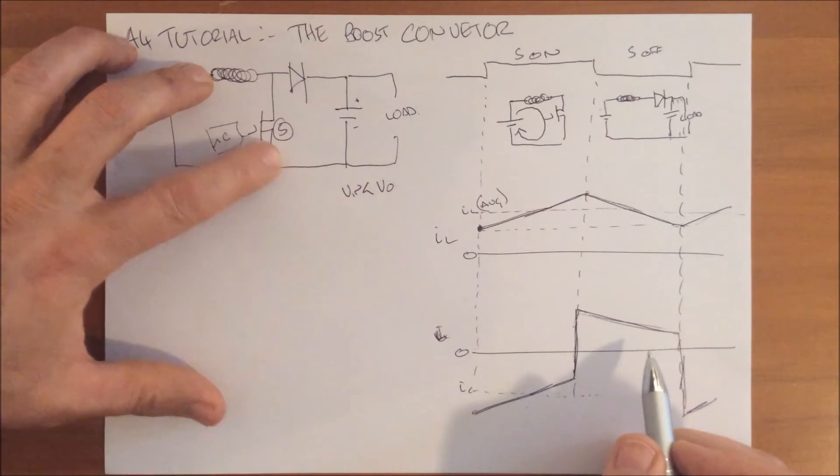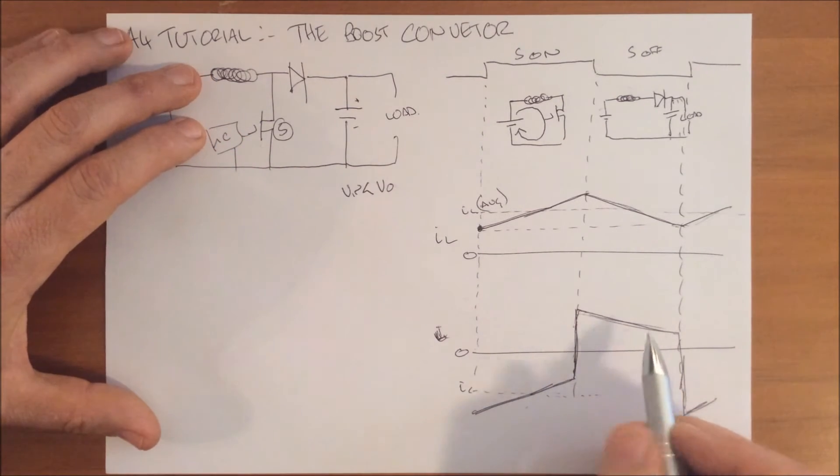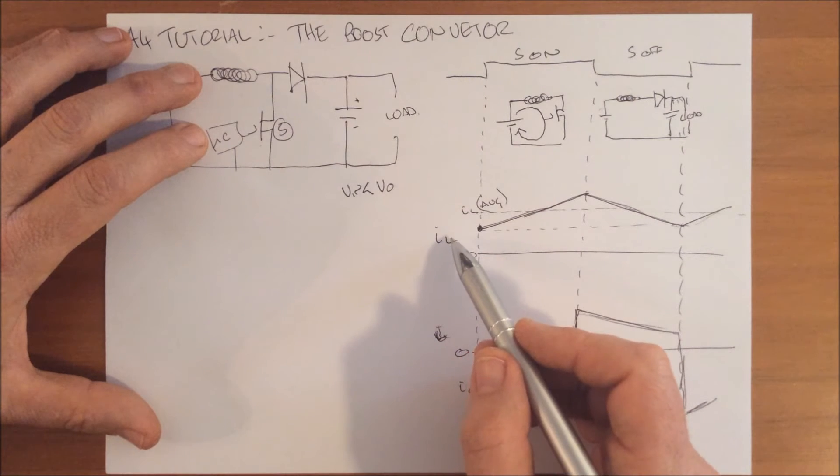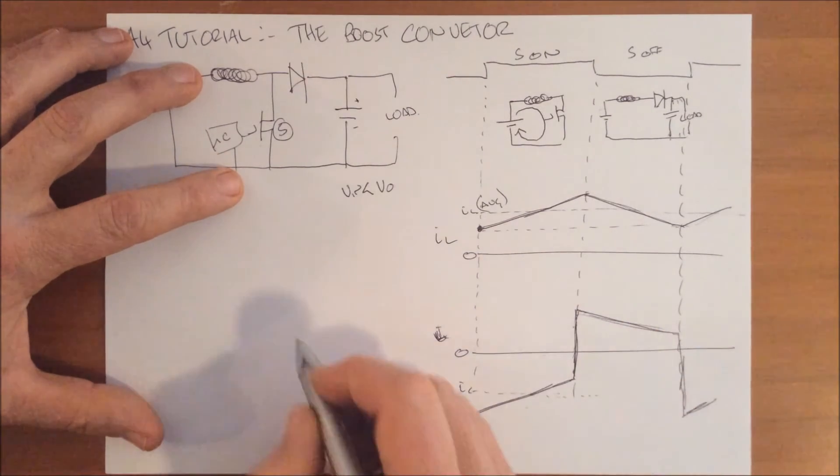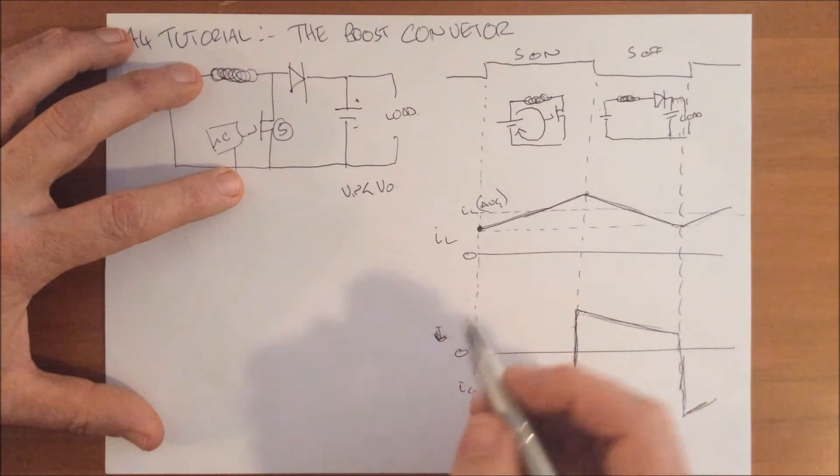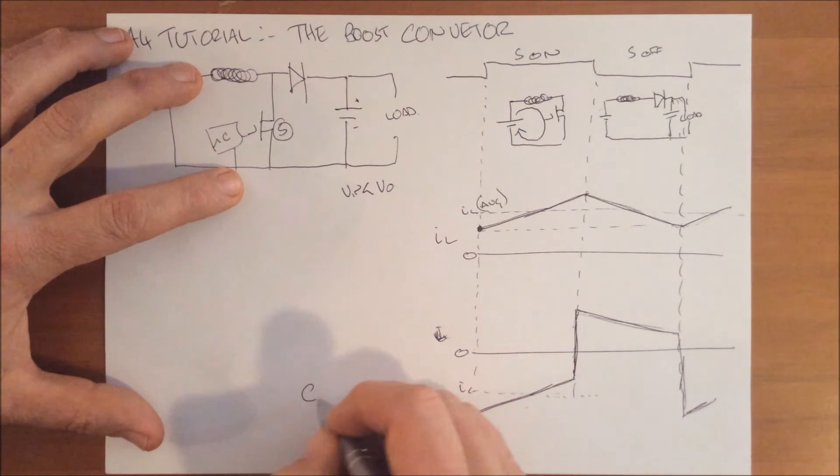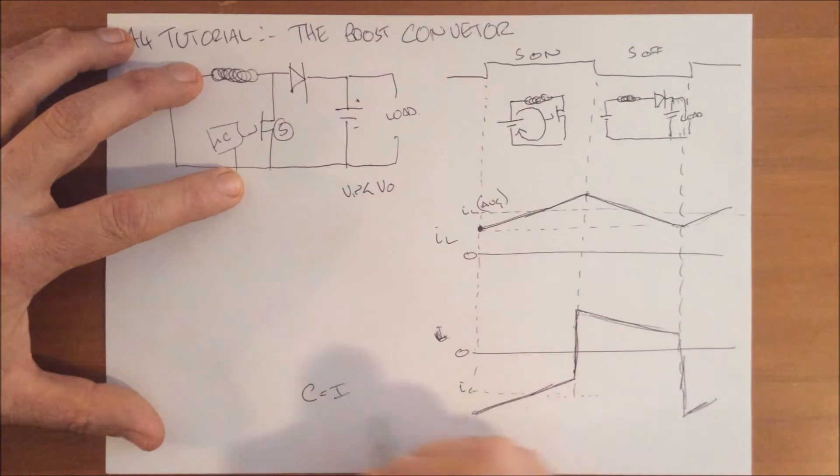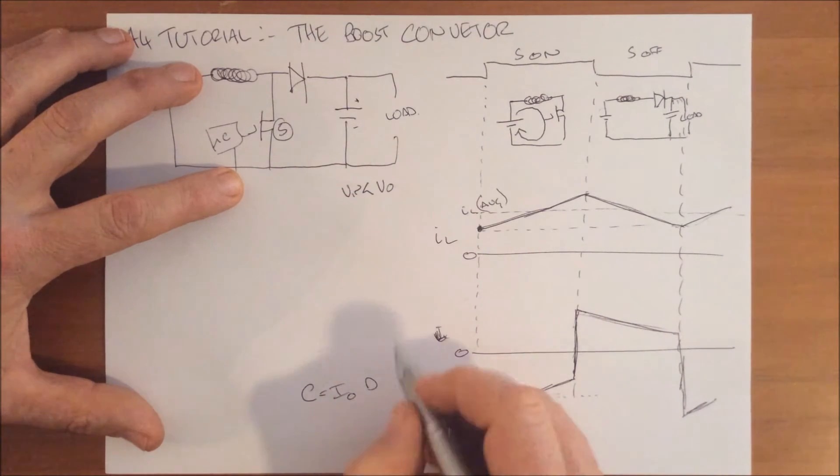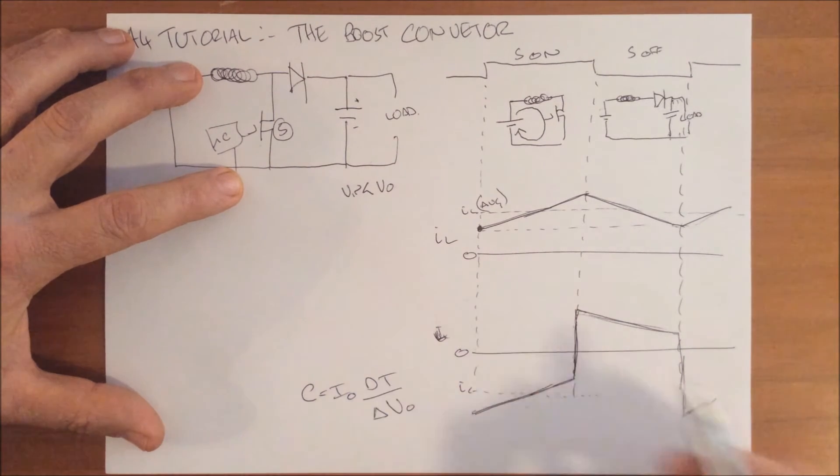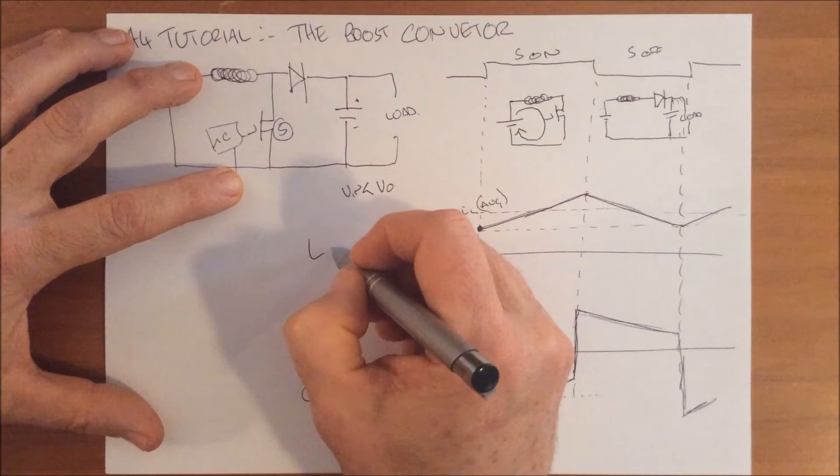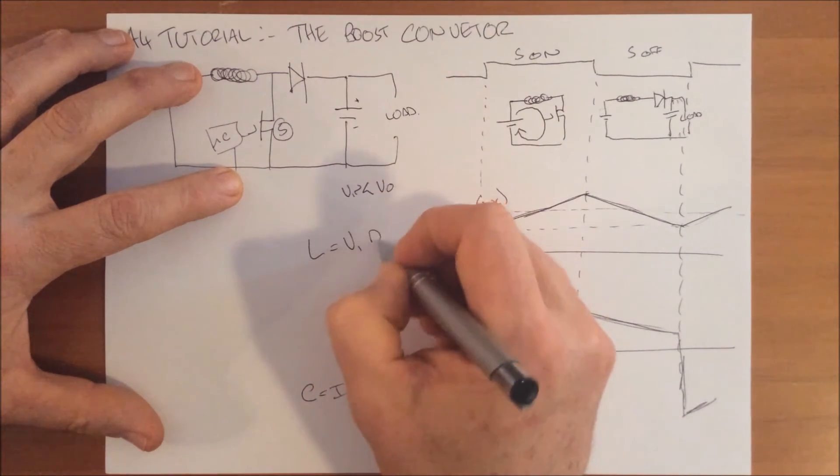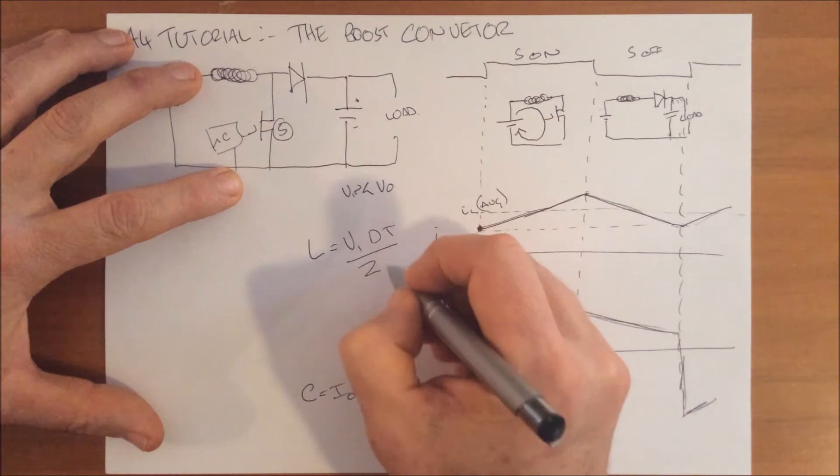To calculate what these values will be, it all depends on the amount of ripple you want and expect. Without going through all the math, the capacitor will be the average current you're expecting out times the duty cycle times the period over the ripple. The inductor is the input voltage times DT over two times the input current.